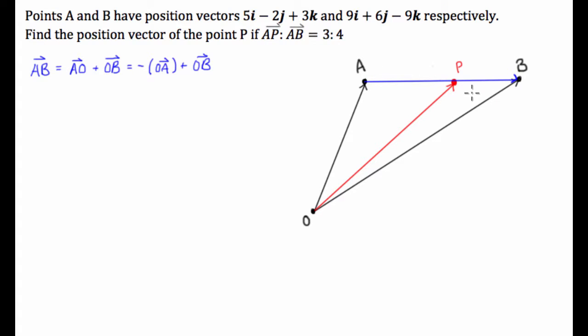And let's work this one out, so negative OA, we have this one, so we are going to have negative 5, negative 2, 3 plus 9, 6, negative 9.